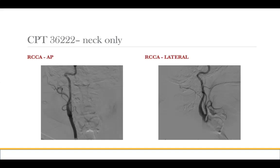To make this clear: CPT code 36222 is placement in the common carotid artery and imaging of the neck only — not the intracranial internal carotid artery. As you can see here, the catheter is placed at the bottom of the screen and only the neck of the internal carotid artery is imaged. The cutoff is roughly the petrous or cavernous carotid artery; the intracranial space is not actually imaged here.